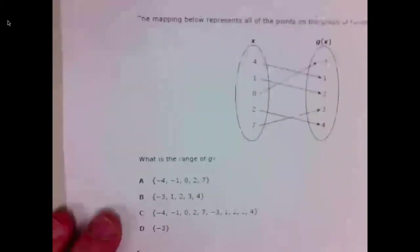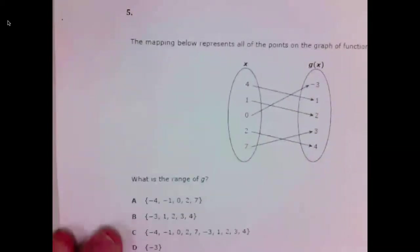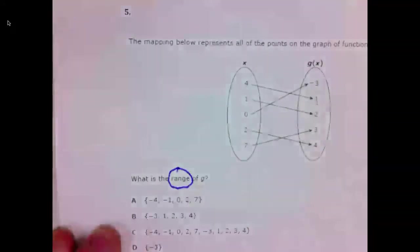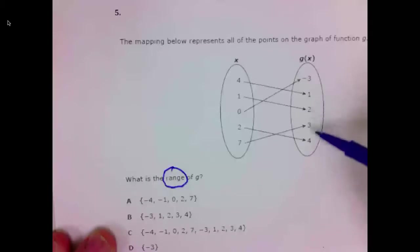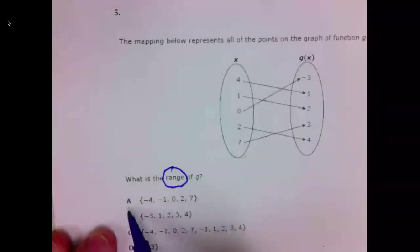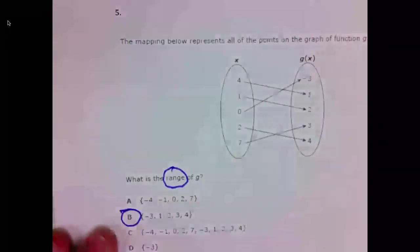Number five. Five asks, what is the range? Well, range is the output. You see here, it's negative three, one, two, three, so forth. Five is B.